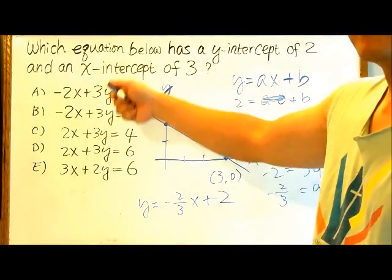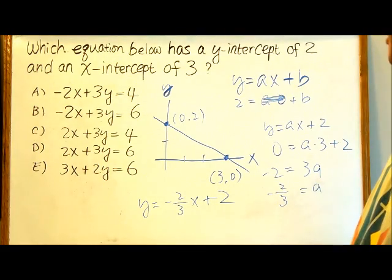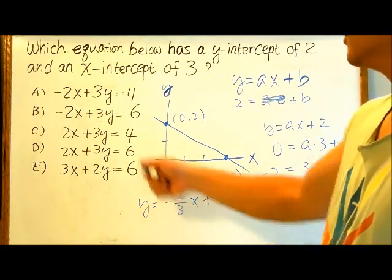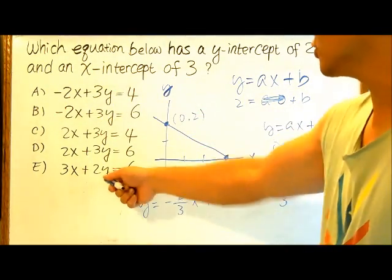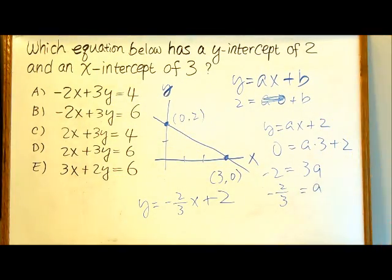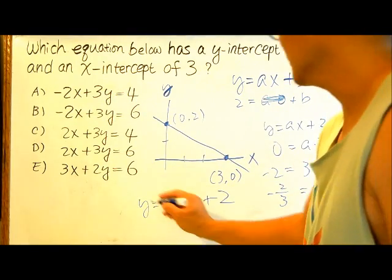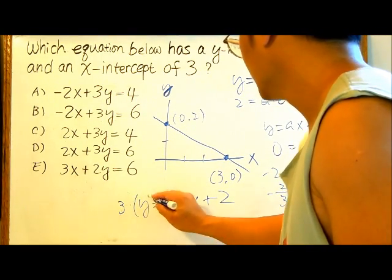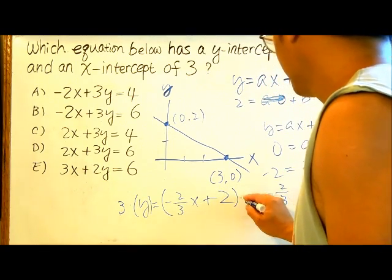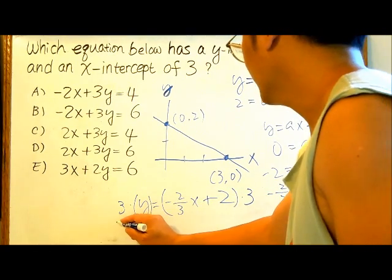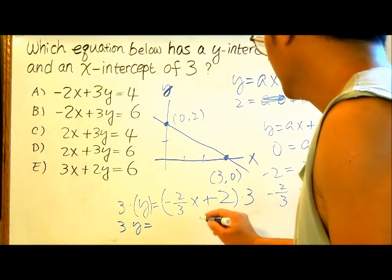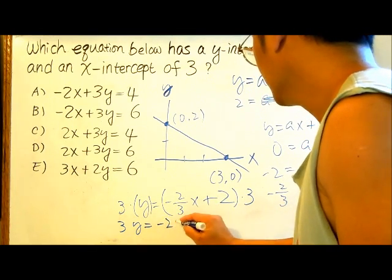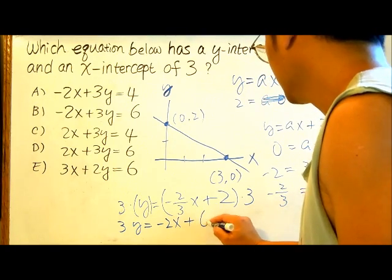You notice it doesn't quite match anything here. So that means we need to multiply by something on both sides. Let's multiply everything by 3 on both sides. Then we will have 3y equals 3 times negative 2 thirds x, which gives us negative 2x plus 6.